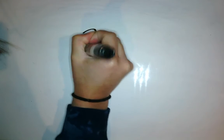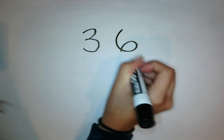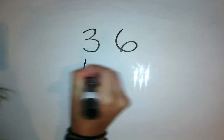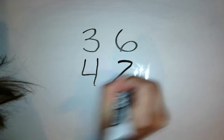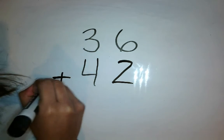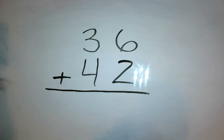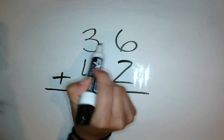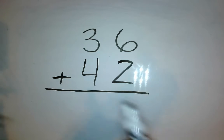Let's do 36. And we're going to add, we'll go 42. So I have 36 plus 42 equals. Let's write that together. 36 plus 42 equals.